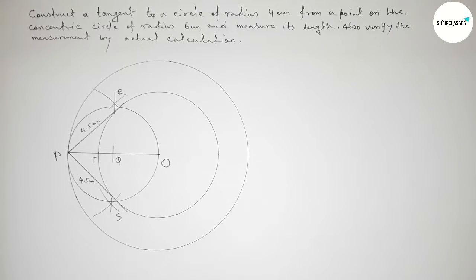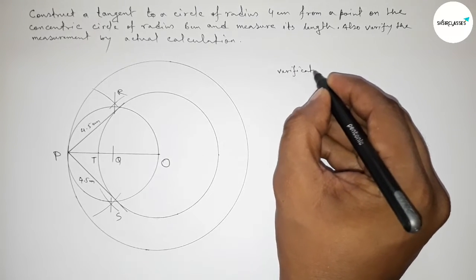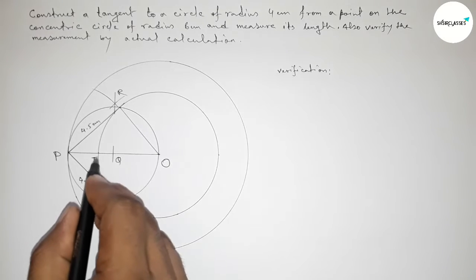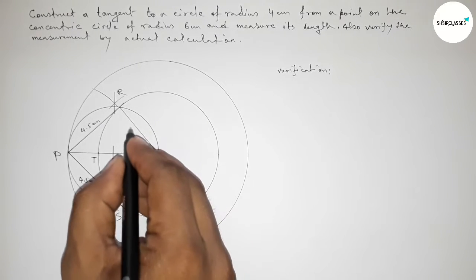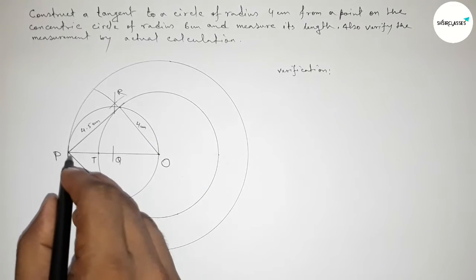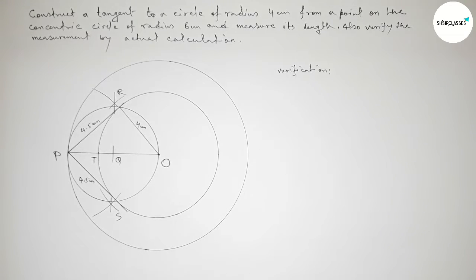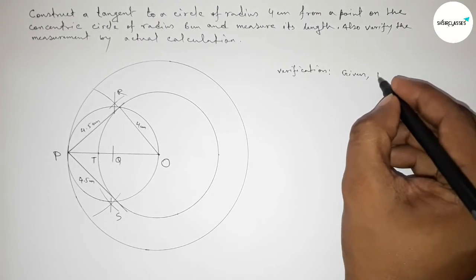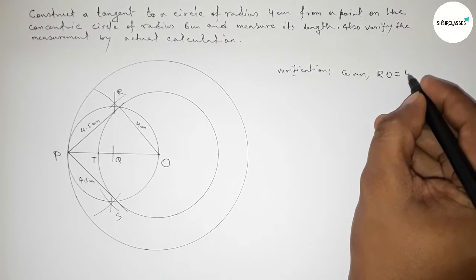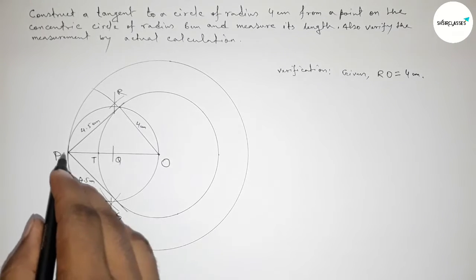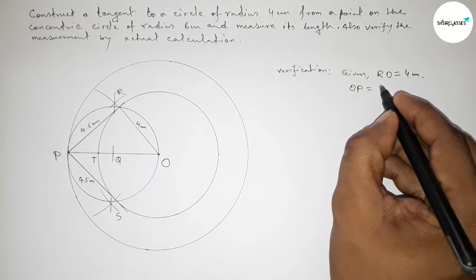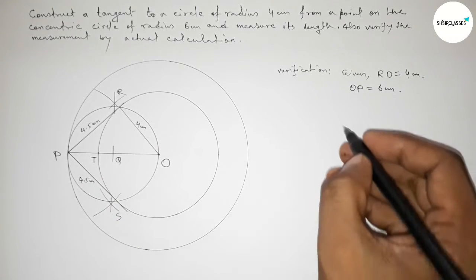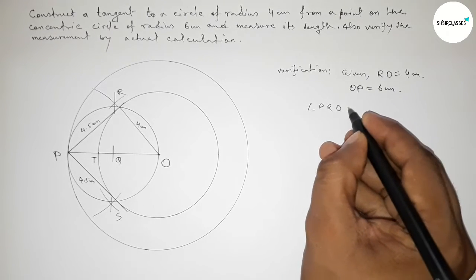Now we verify this by actual calculation. We join O and R. OR is the radius of the smaller circle, so OR equals 4 centimeters. OP is the radius of the larger circle, so OP equals 6 centimeters. Given: OR equals 4 centimeters and OP equals 6 centimeters.